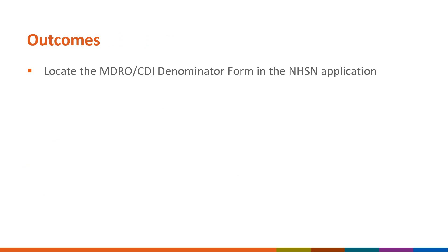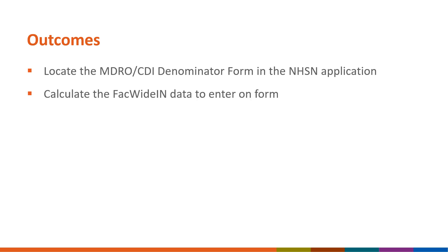By the end of this QuickLearn you will be able to locate the MDRO and CDI denominator form in the NHSN application, calculate the FACWIDE-IN data to enter on the form, and make an accurate selection for CDI test type.